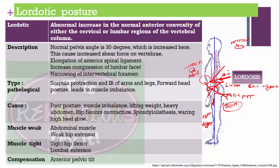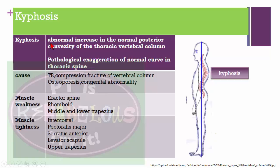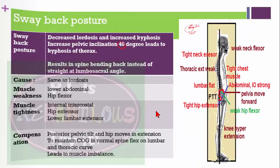Kyphotic posture means an abnormal increase in the normal posterior convexity of the thoracic vertebrae — a pathological exaggeration of the normal curve in the thoracic spine. Causes include tuberculosis, compression fracture, osteoporosis, or congenital abnormality. Tight muscles include intercostals, pectoralis major, serratus anterior, levator scapulae, and upper trapezius. Weak muscles include erector spinae, rhomboids, and middle and lower trapezius.